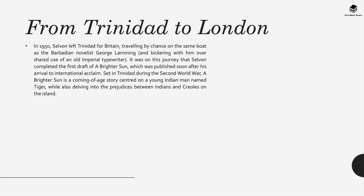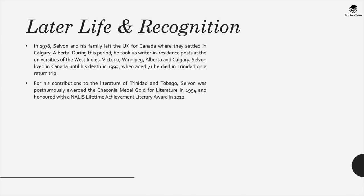A Brighter Sun was set in Trinidad during the Second World War and it's a coming-of-age story centred on a young Indian man named Tiger, while also delving into the prejudices between Indians and Creoles on the island. In 1978 he and his family left the UK for Canada where they settled in Calgary, Alberta, and during this period he took up writer-in-residence posts at different universities around Canada as well as the West Indies. He passed away in 1994 at age 71.